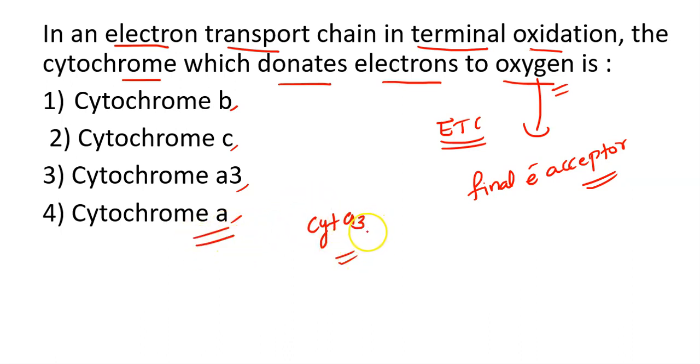When we make oxygen the electron acceptor and electrons are donated — okay — so our answer will be option 3.